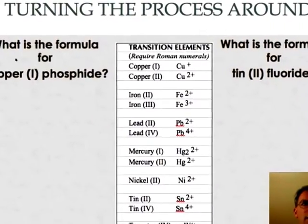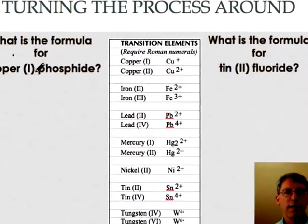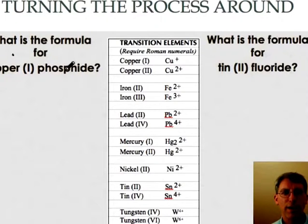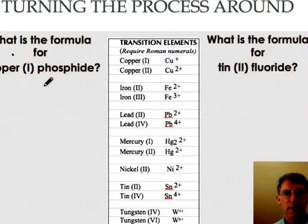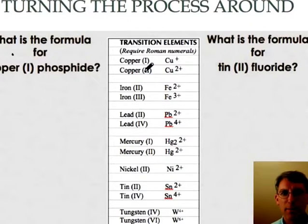Now let's turn the process around. So say this time I gave you a formula say copper one phosphide. And we want to turn it into a chemical formula. So copper one. Let's look it up. Copper one over here.